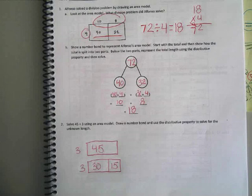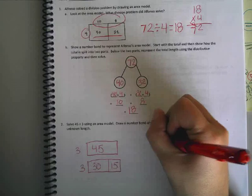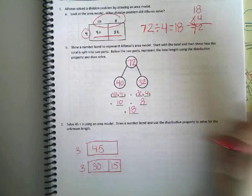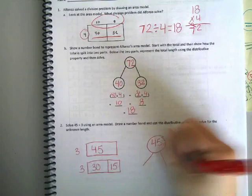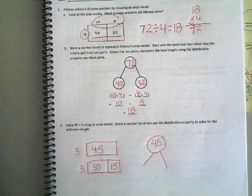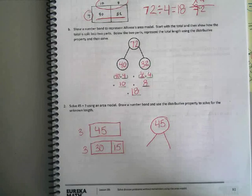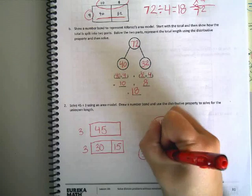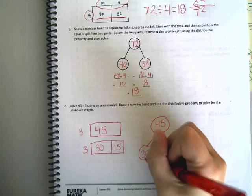So now we have to figure out these two sides. So let's draw our number bond to start out. What goes at the top of our number bond? 45. You got it. Josie, what two numbers come off my number bond? 30 and 15. You got it. A 30 and a 15.